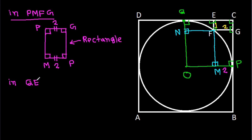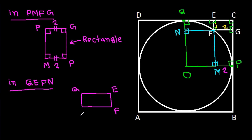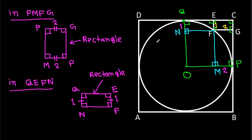Similarly, in quadrilateral QEFN, three angles are each 90 degrees, so the fourth angle is also 90 degrees. That means QEFN is a rectangle. Therefore EF equals QN, and since EF is 1, QN is 1.